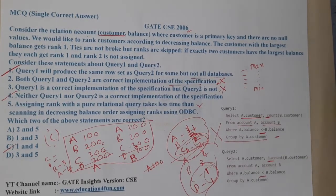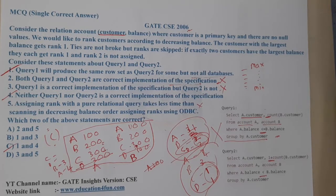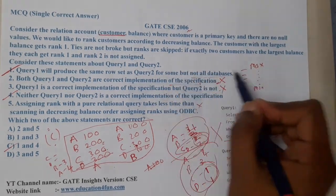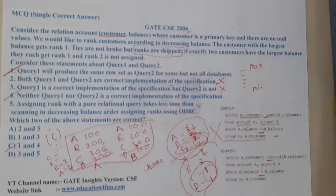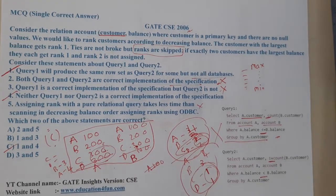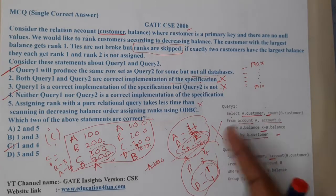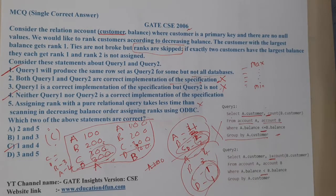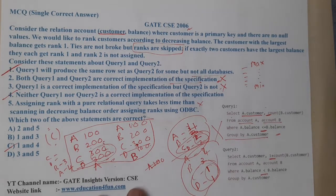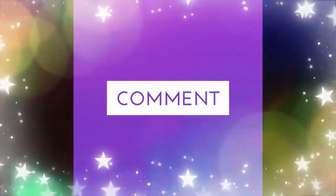To summarize: first I tested with unique values 100, 200, 300 and both queries gave the same correct-looking results. Then I tested with duplicate values — customer D also having 300 — and the two queries gave different outputs. Also, neither query correctly skips ranks on ties as specified. Therefore option one is correct (queries differ for some databases) and option four is also correct (neither is a correct implementation), making the answer C.